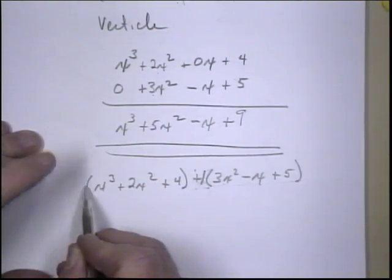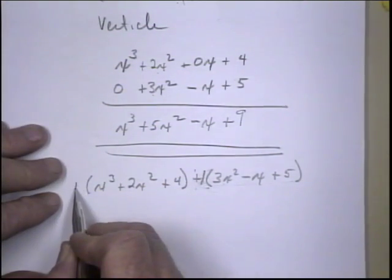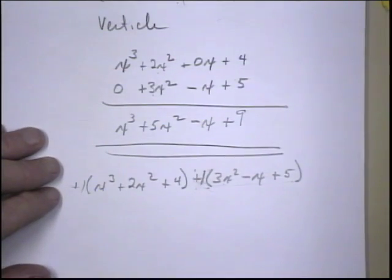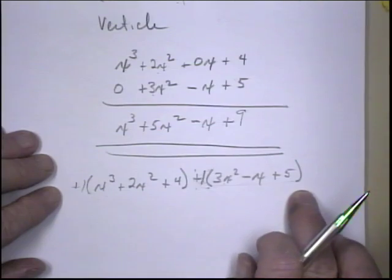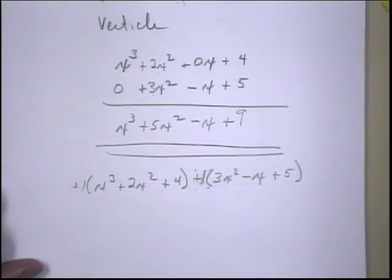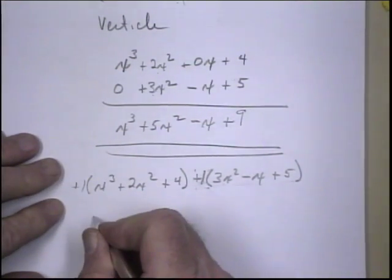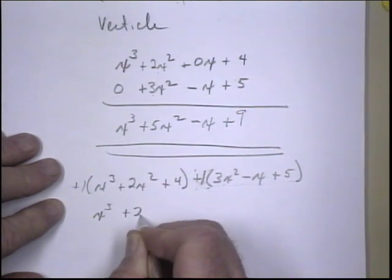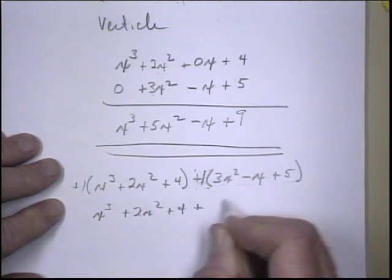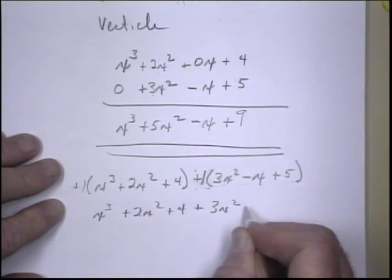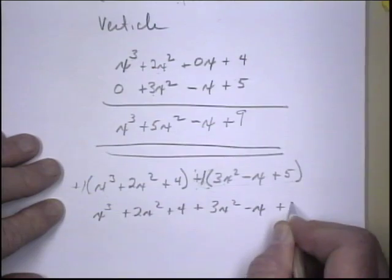The same is true here. There's no sign or anything out here. Well, this is like a positive 1 out there. So we can remove this parentheses and remove this parentheses because we're just multiplying each by a positive 1. So this would be x cubed plus 2x squared plus 4 plus 3x squared minus x plus 5.